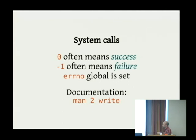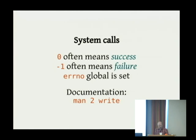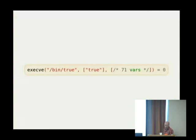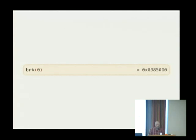If you're wondering what the different errors are that a system call can return, you can ask the man command to look up in section 2 the particular system call you've seen listed in the output of strace or truss. The first line in that trace is a success: it's the process asking the system to load up and run the /bin/true command.